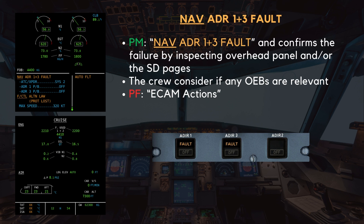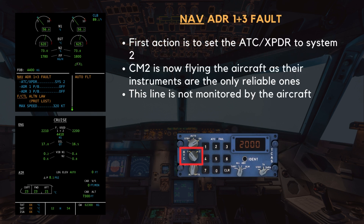The crew consider if any OEBs are relevant. If not, then the pilot flying announces: "ECAM actions." The first action is to set the ATC transponder to System 2. This makes sense as CM2 is now flying the aircraft because their instruments are the only reliable ones. This line is not monitored by the aircraft, meaning the blue line will not clear even if the correct action is taken.